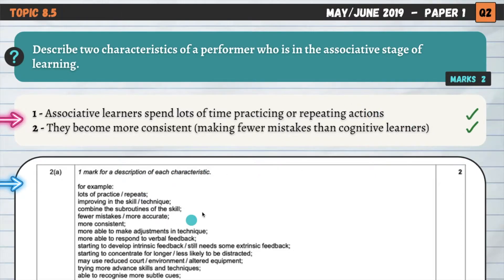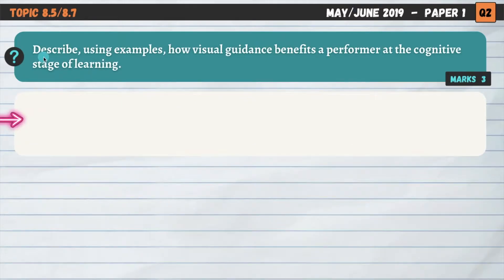There are lots of different things we could have talked about here, so pause the video to familiarise yourself with these points. These questions on the characteristics of the different stages of learning come up quite often. So describe using examples — and this is important, we need to include examples — how visual guidance benefits a performer at the cognitive stage of learning.